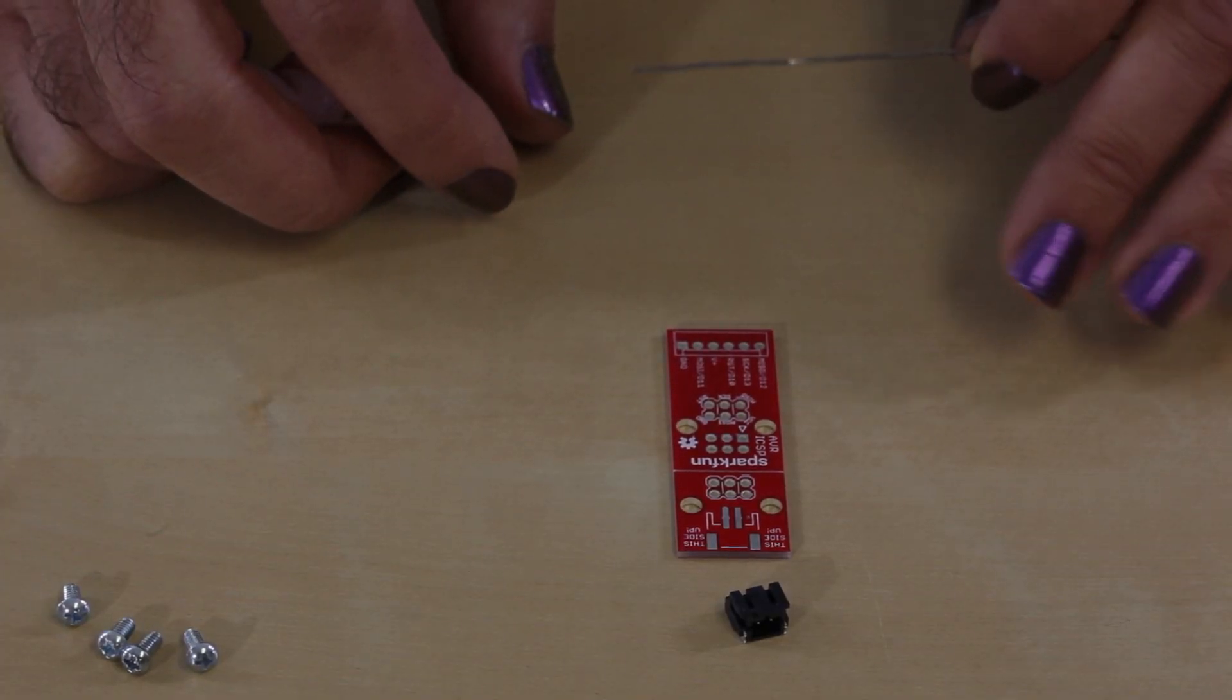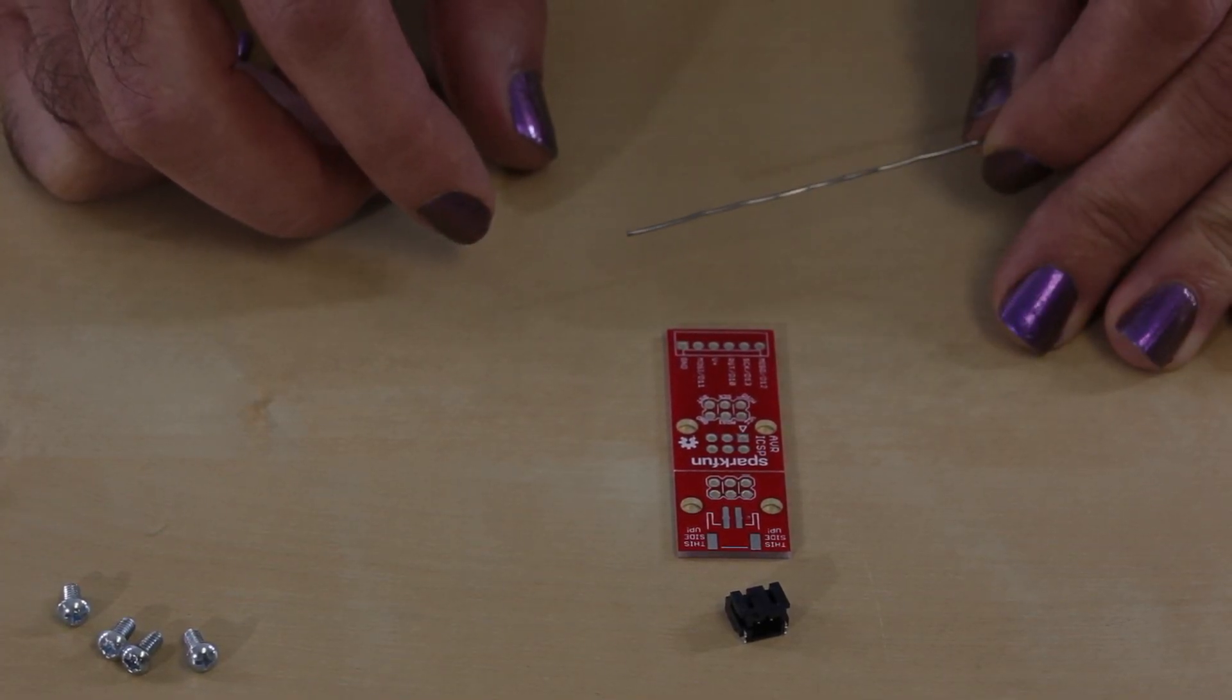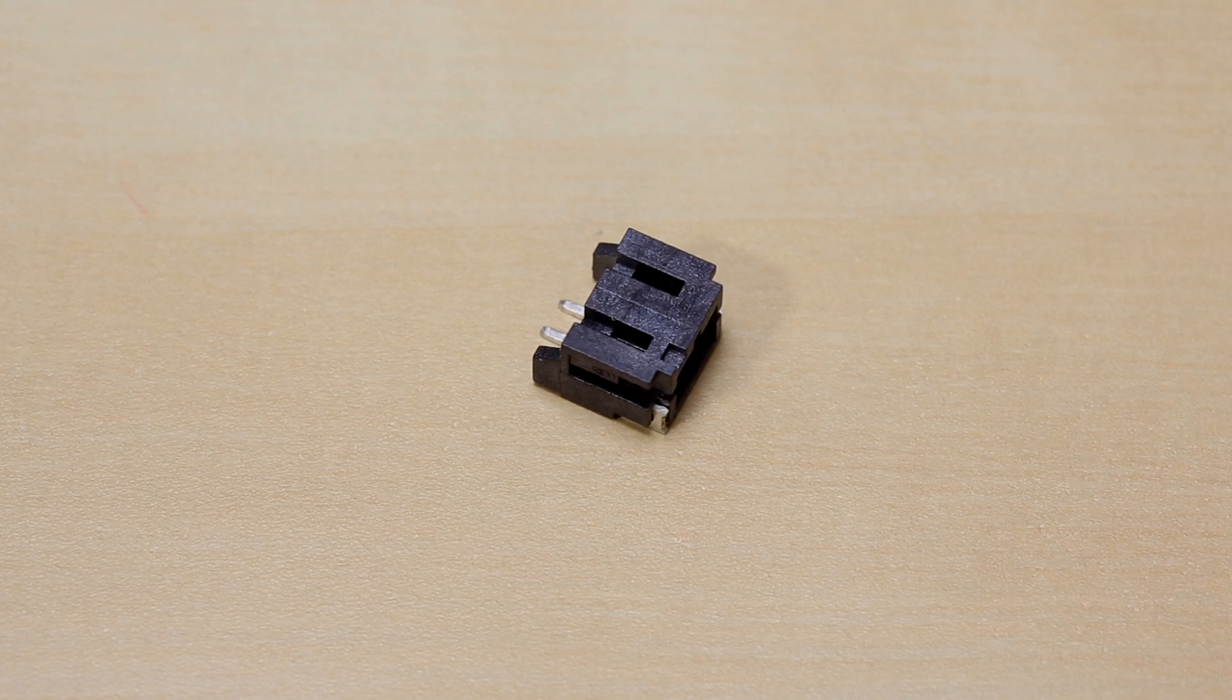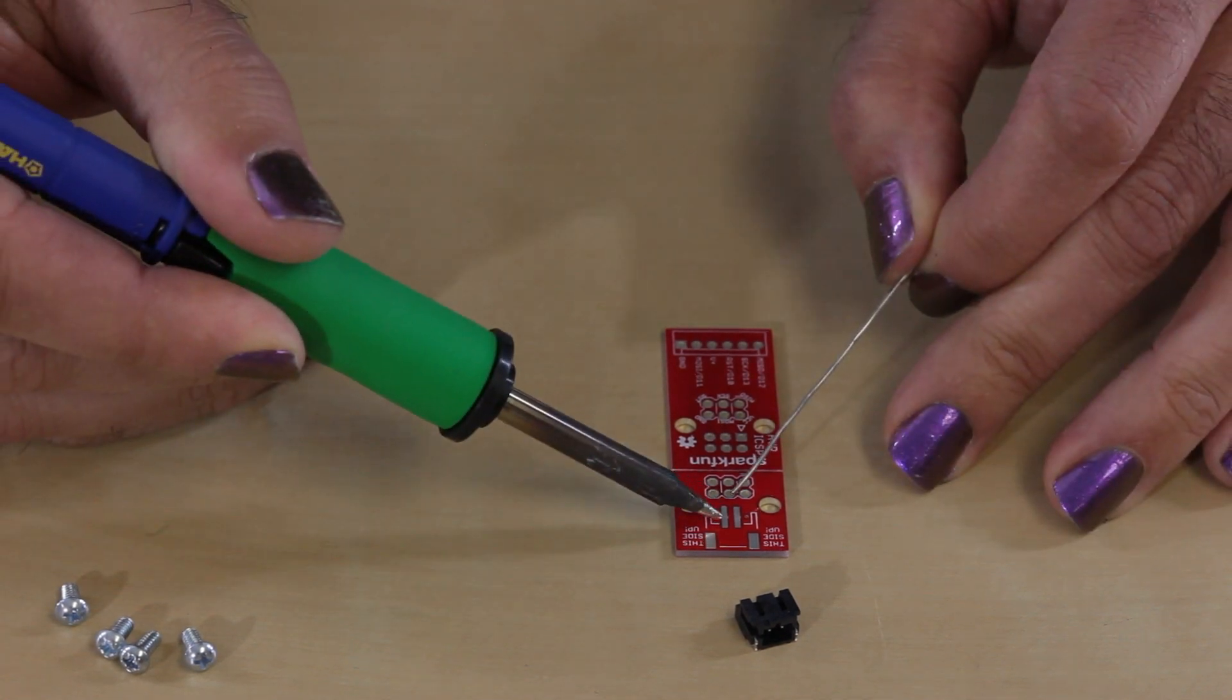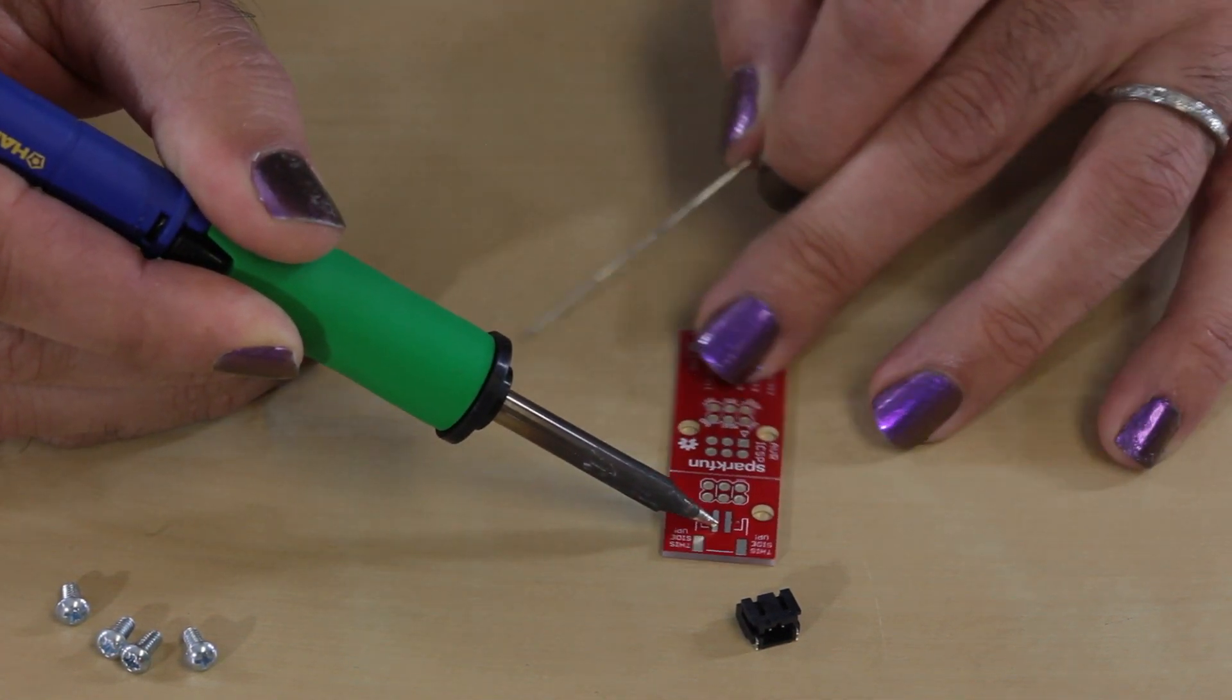First step we're going to do here is we're going to put this JST connector on the board. The reason for the JST connector is that it provides you with a port to power your board if the board is not already self-powered. This is surface mount, it's really easy to put on.